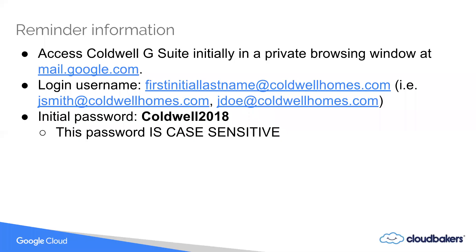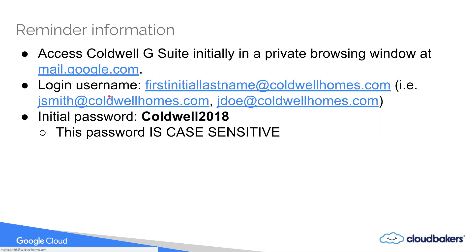The basic instructions for getting into your Coldwell G Suite account: initially you're going to want to open up a private window in a private web browser at mail.google.com. The reason you want to open this in a private window is in case you're already logged into a personal G Suite account, so you don't have to log out and log back in. You're going to need to know your Coldwell email address, username, and initial password. Your Coldwell email address is going to be the first initial of your name and then your last name, all one word — like JSmith or JDoe at caldwellhomes.com. Your initial password into Coldwell G Suite is 'Caldwell2018' with a capital C. This password is case sensitive, so make sure you capitalize the C. Once you enter that initial password, you're going to be asked to change it to something unique.